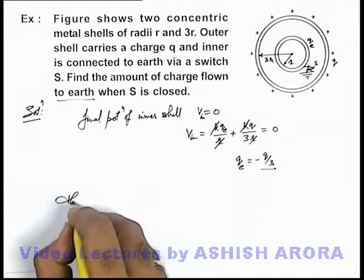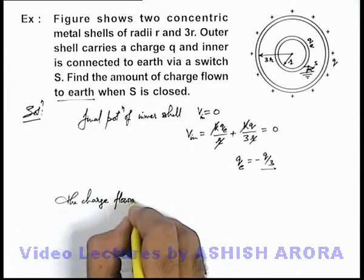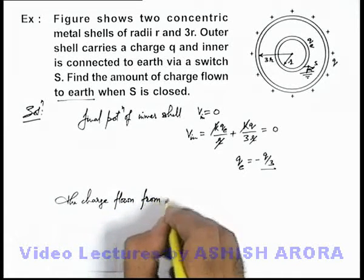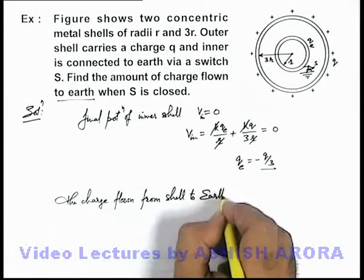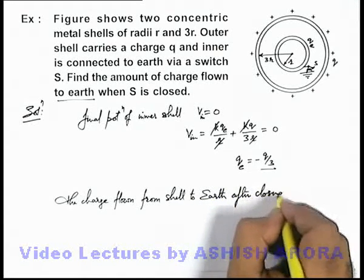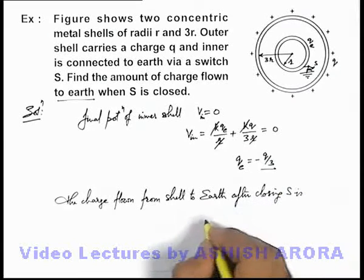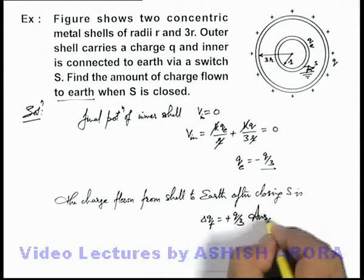The charge flown from shell to earth after closing S can be written as plus q by 3. That is the answer to this problem.